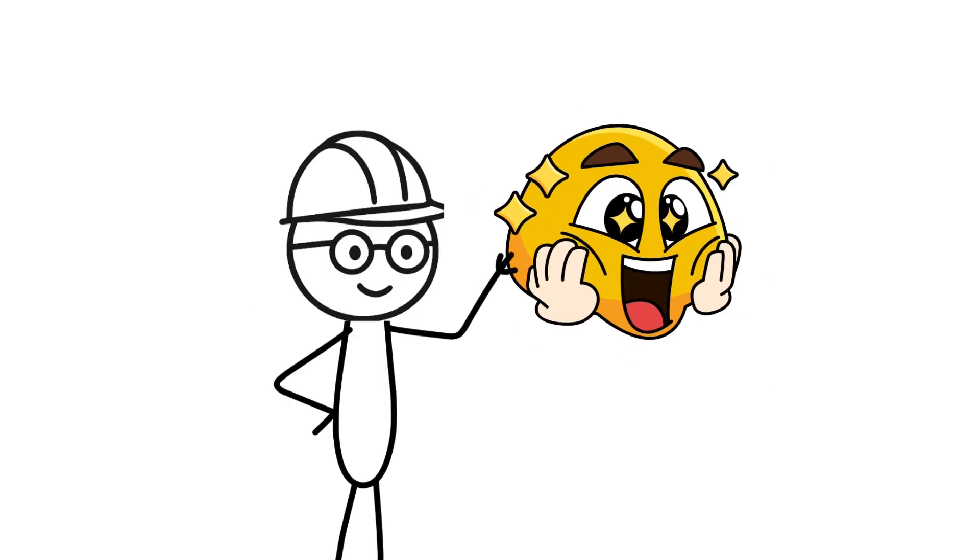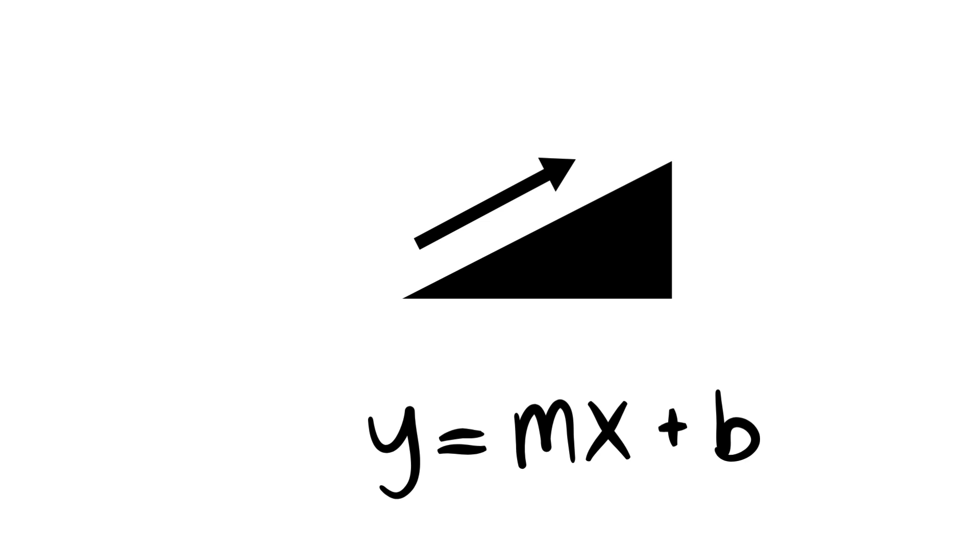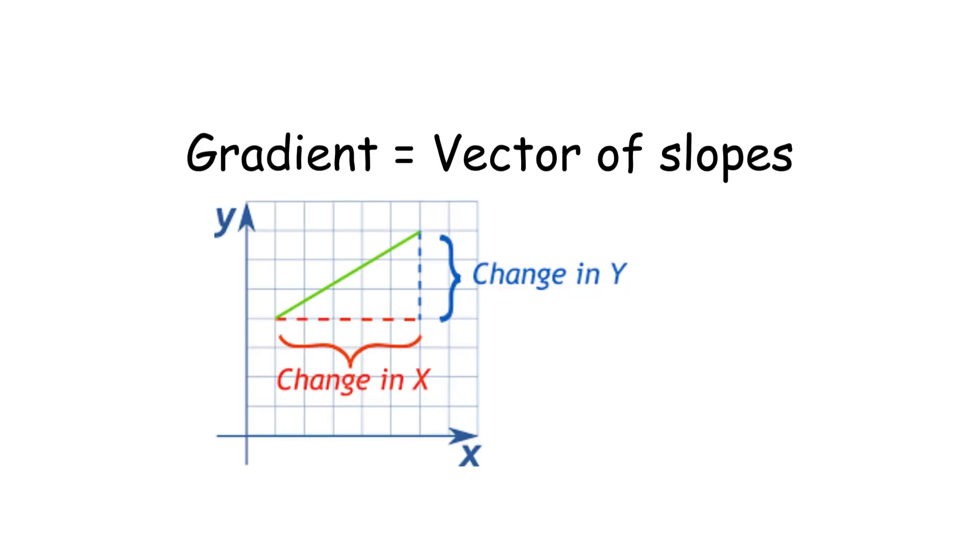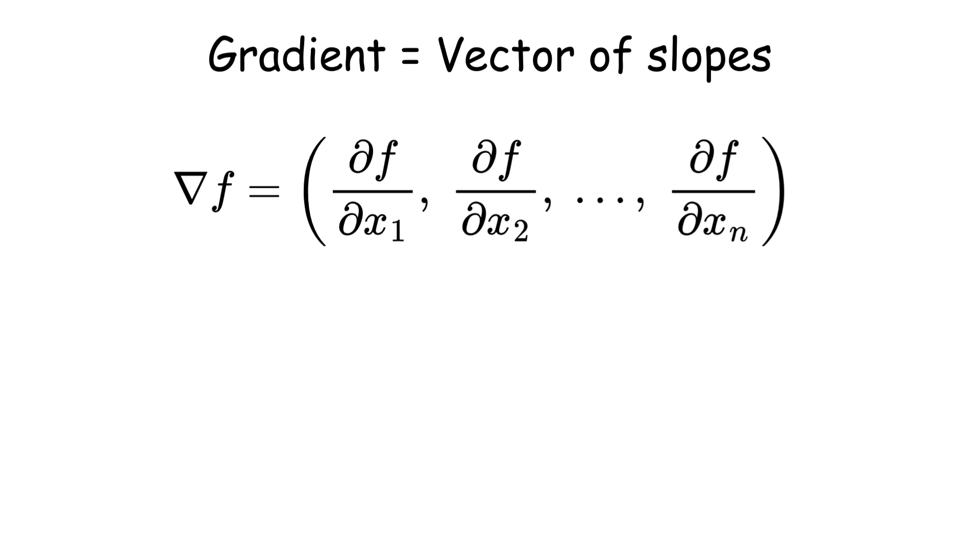But here's where it gets interesting. Instead of just finding slopes, we get something called the gradient. The gradient is a vector made up of all the partial derivatives. Express this in what the nerds call del notation, that upside down triangle symbol.